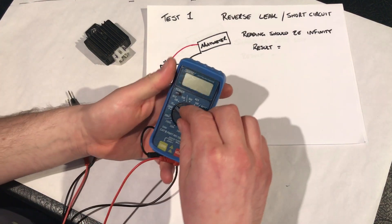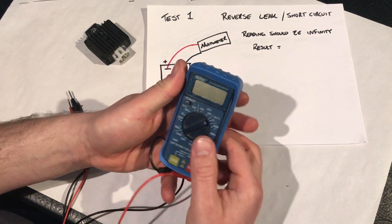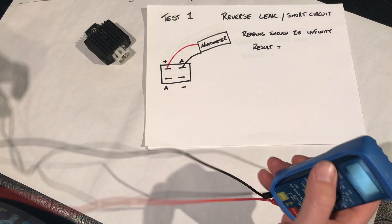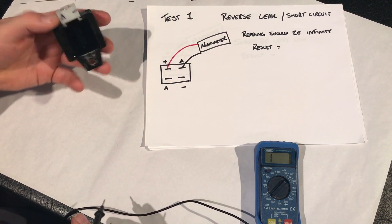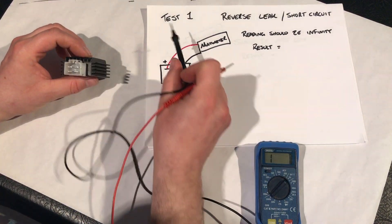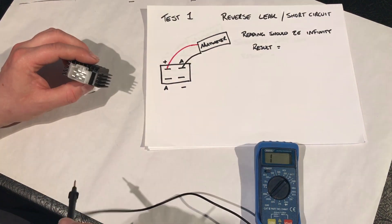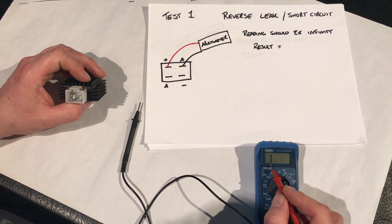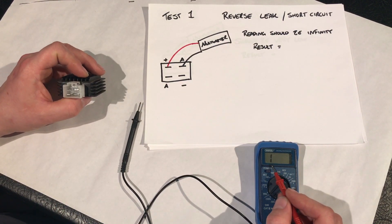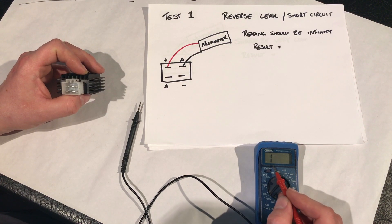So I've set my multimeter to 2000k. Turn it on. So as you can see here, test one, reversely short circuit. So the reading should be infinity. So this number here, one, should stay the same, because that's reading infinity.